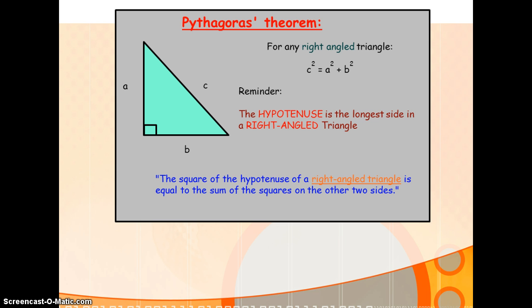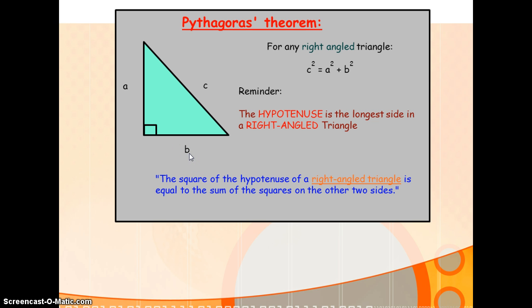If you're doing National 4 Maths or below, the formula will be given to you. If you're doing National 5 Maths, this is a formula that you need to know. The formula states that the square of the hypotenuse of a right angled triangle is equal to the sum of the squares of the other two sides. In other words, the hypotenuse squared is equal to the sum of the squares of the other two sides.